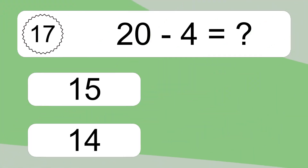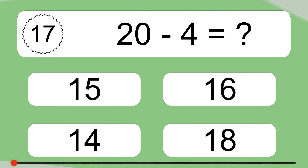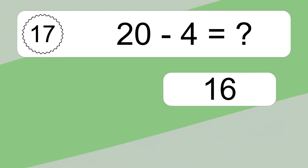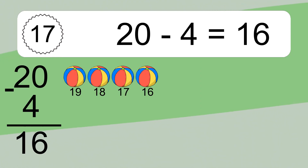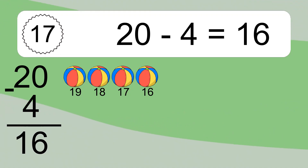20 minus 4 equals what? 20 minus 4 equals 16. Let's count it: 19, 18, 17, 16.